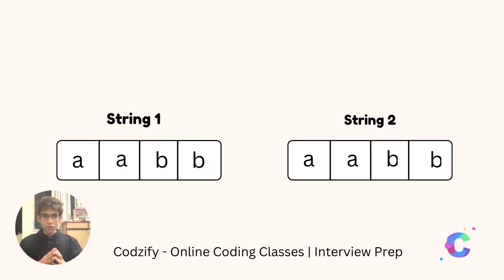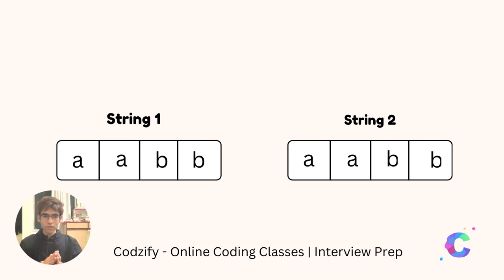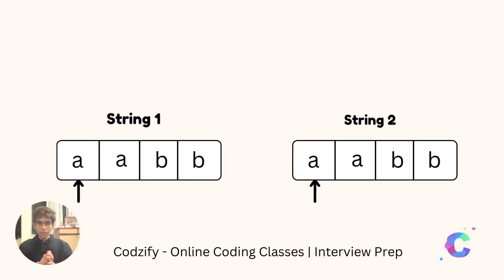What we will do here is we will sort all the elements of string1 and string2. So string1 now becomes AABB and string2 now becomes AABB. Now we will check the elements one by one of string1 and string2. The first character of string1 is A and the first character of string2 is A.